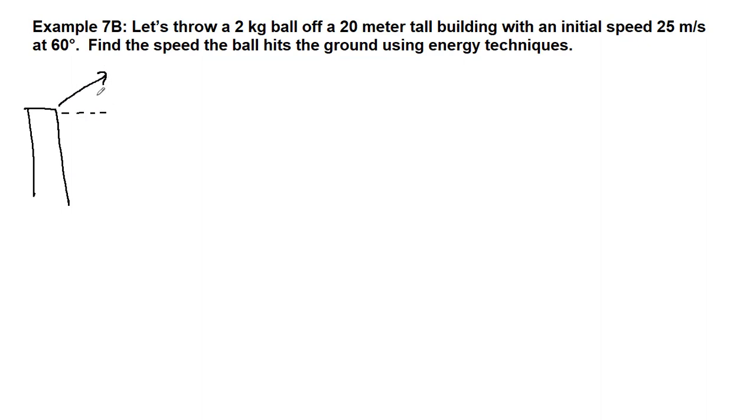We have an initial velocity at an angle, so 25 meters per second, and the ball is going to go over and then hit the ground at some spot.